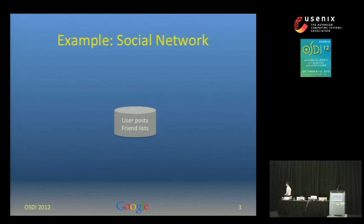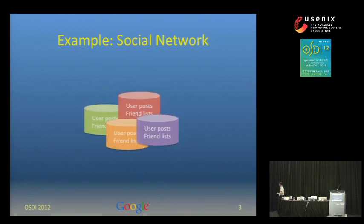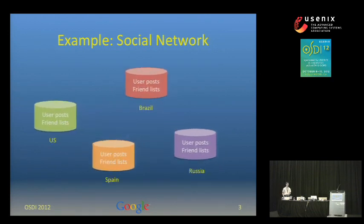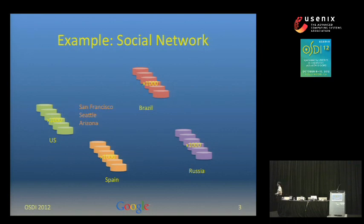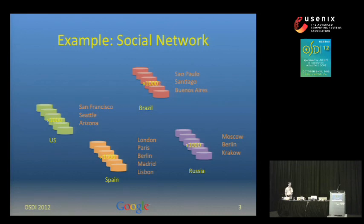Spanner provides a single system that looks a lot like a single database, but it lets you shard the data across multiple continents. We want to store data across the globe. In this example, we have four separate continents, storing data in four countries. We're sharding data thousands of ways to spread the load across thousands of machines. We're also replicating that data across data centers — the U.S. three ways, Brazil three ways, Russia three ways, and Spain five ways. All this is client-application configurable.